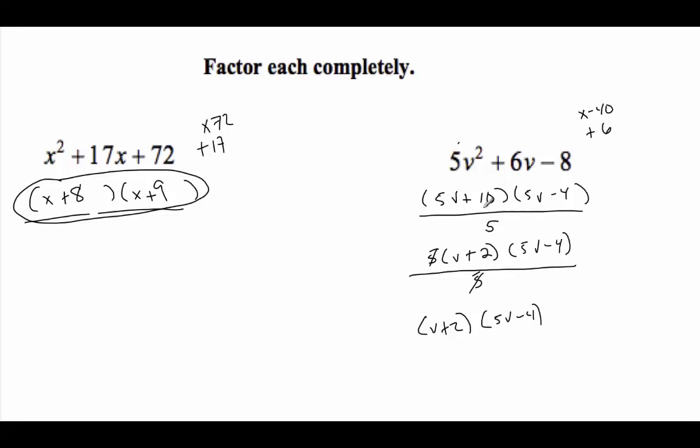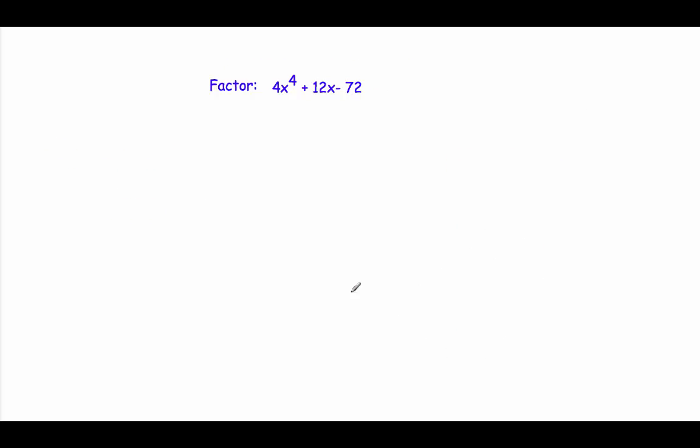Factor first times last. Can we even factor this? No, let's make this a squared. Common factor of 4 I think I can take out, so we're going to have to double factor this. So this is going to be x squared plus 3x minus 18.